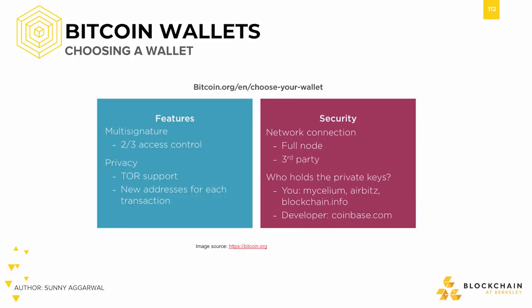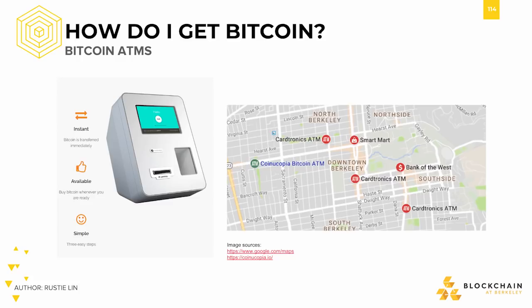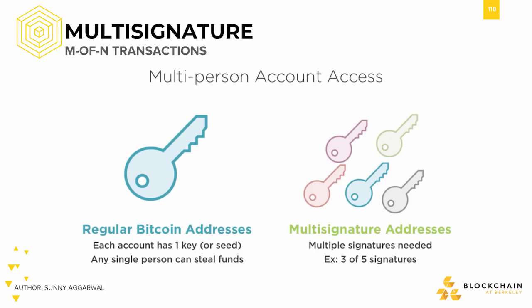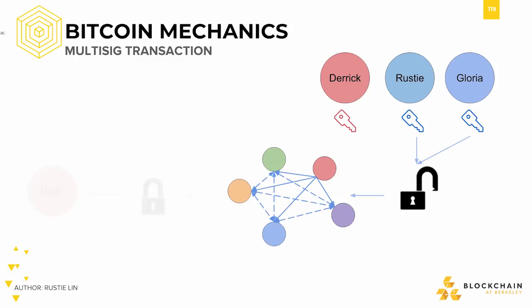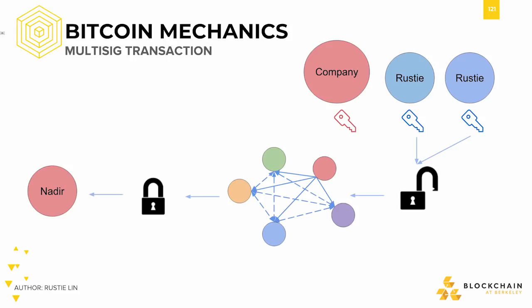We also showed you how to get bitcoins into your wallets — through Bitcoin ATMs, exchanges, or decentralized exchanges. Additionally, we showed you what simple payment verification was, and also demonstrated multi-signature transactions. We went through a demo of how Derek, Rusty, and Gloria can all come together to form a multi-signature wallet so that no one person has control of all the funds. These multi-signature wallets could be used between peers, yourself, or even with a company, so that even if one of your keys is lost, the company can help you recover your funds.